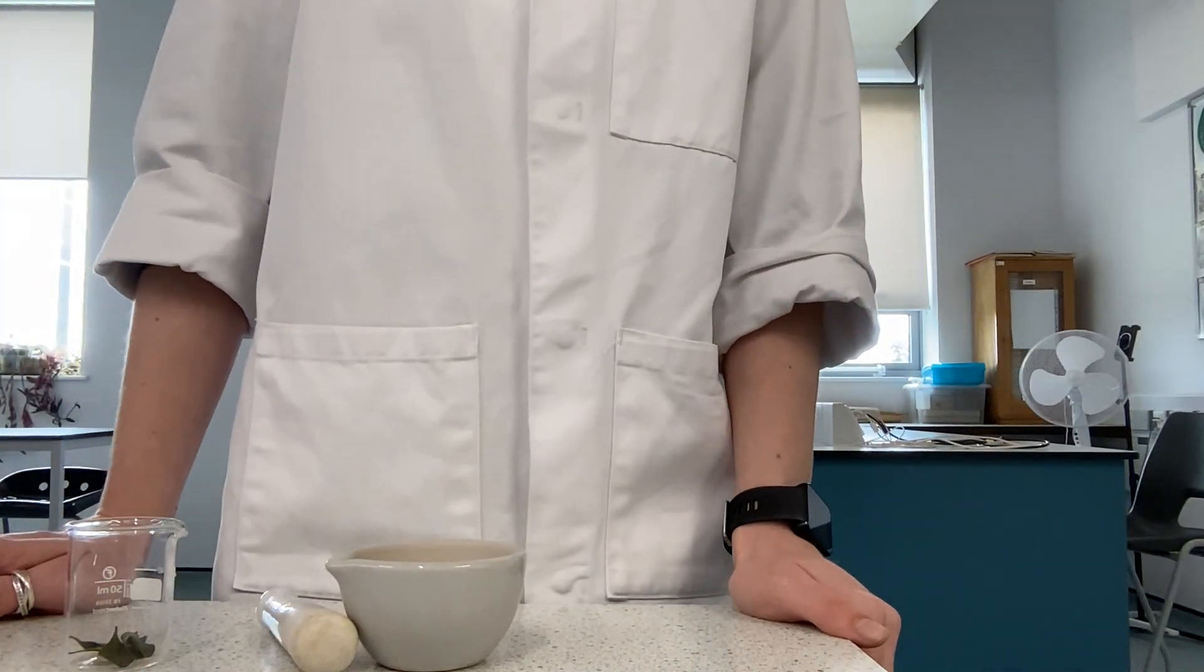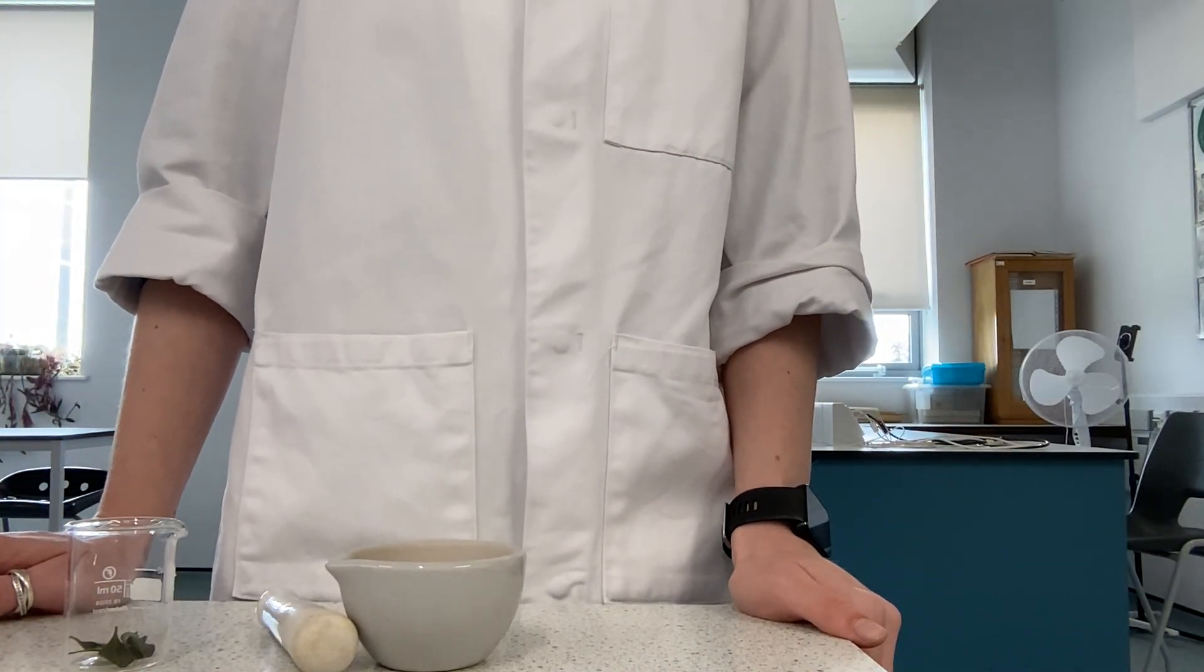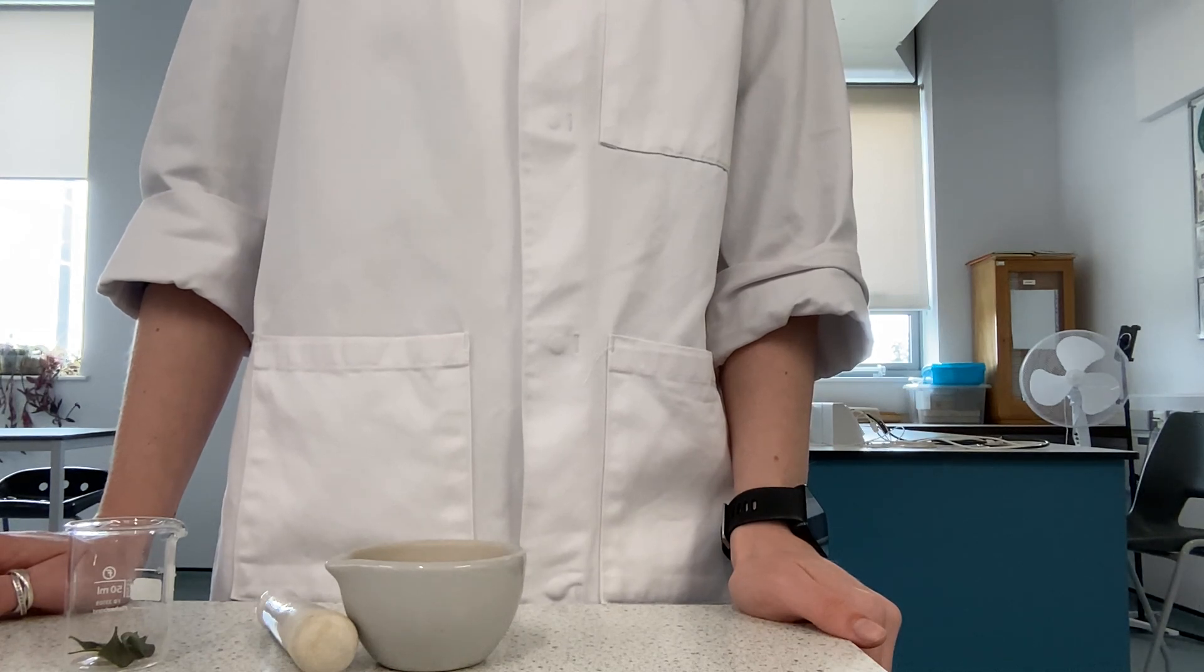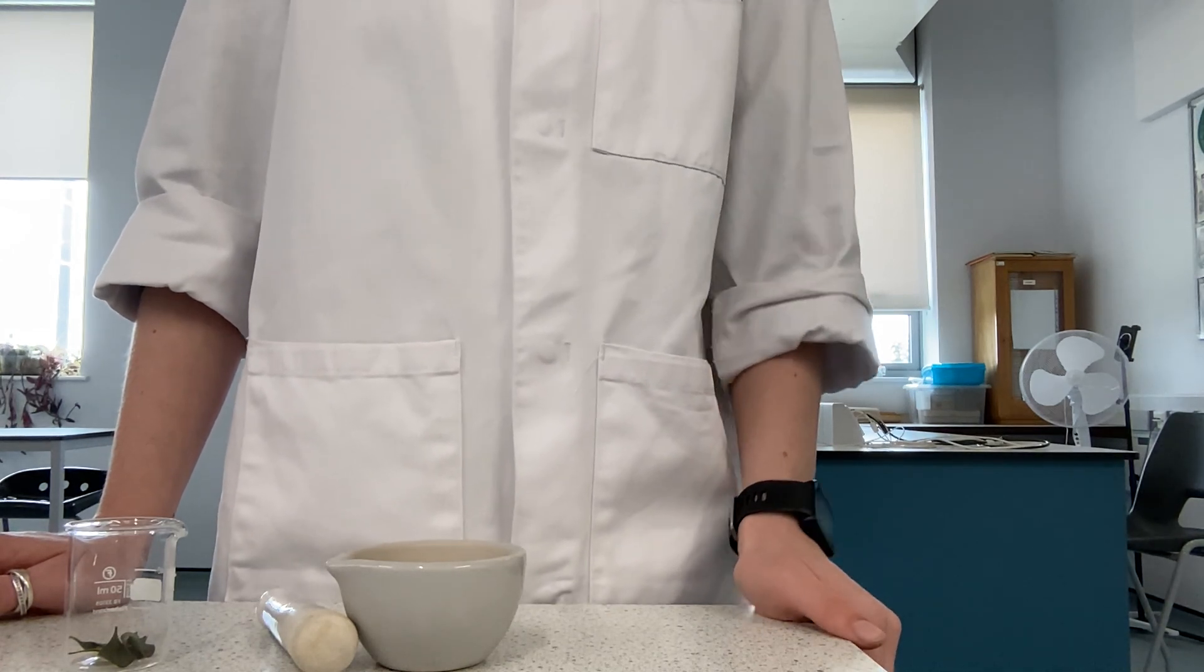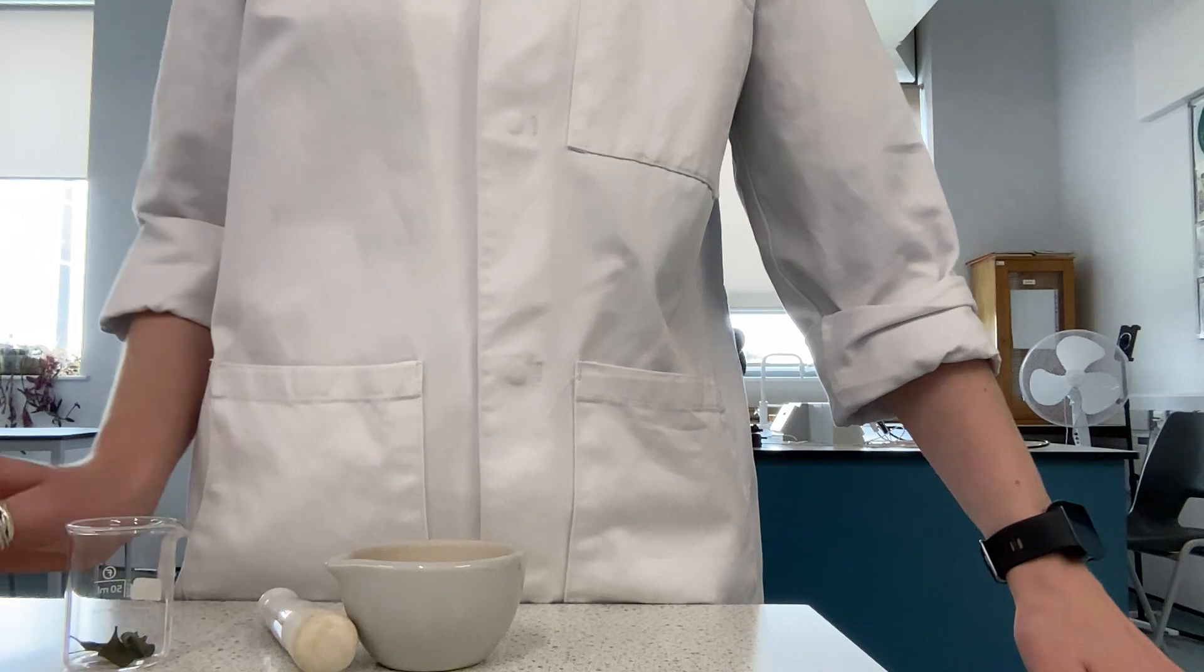Today we're going to be looking at PAG 6.3, which is where we're investigating using thin layer chromatography to separate photosynthetic pigments.